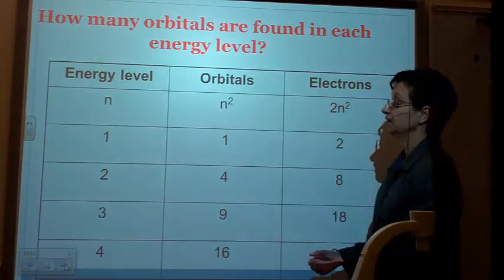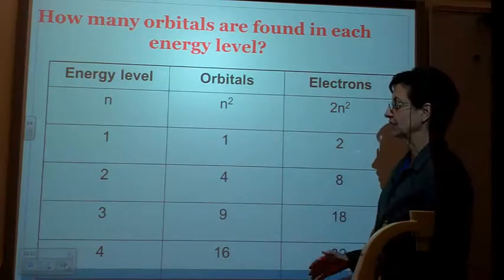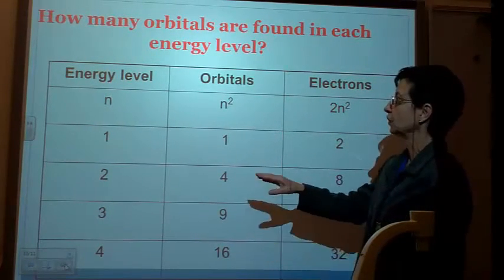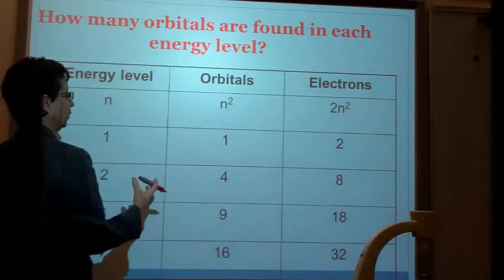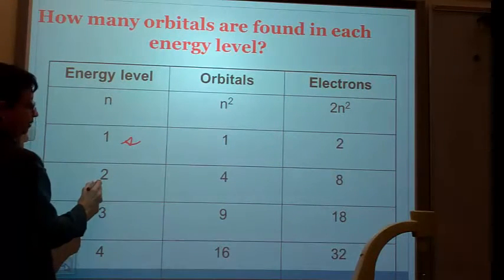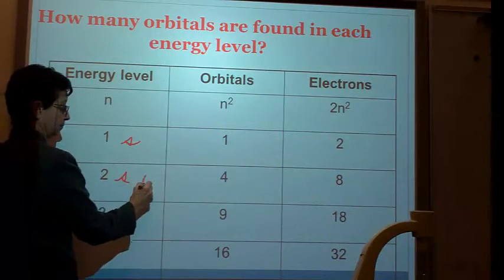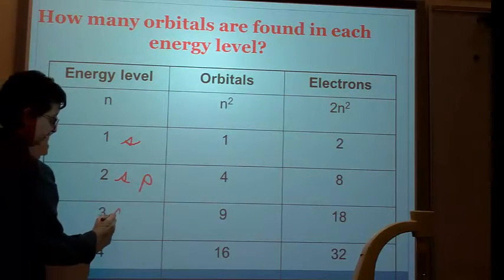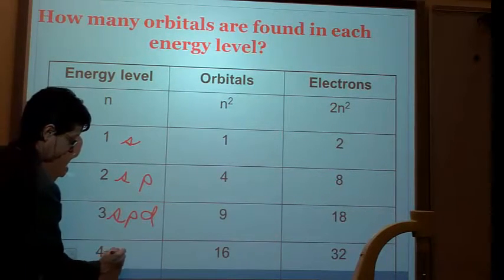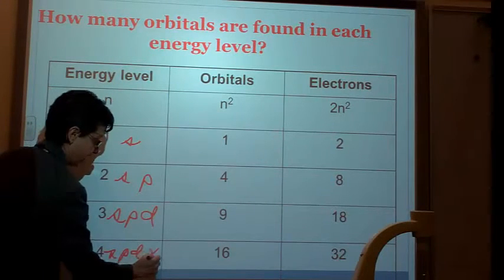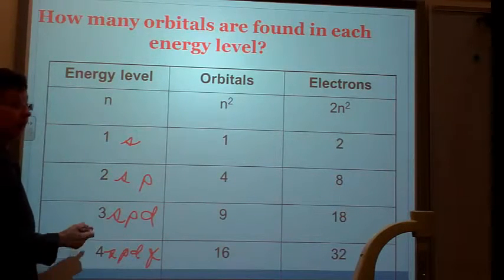All right. And one more thing. How do you tell the total number of electrons in an energy level? So, if an energy level, one, one has only the S orbital, two has S and P, three has S, P, and D, and four has S, P, D, and F. So we can count.